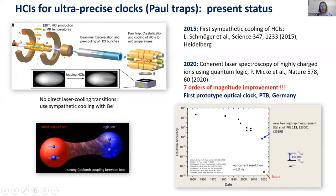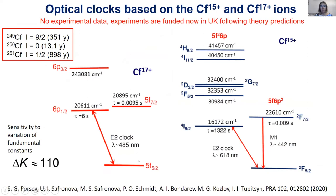The first experiment was done by José Crespo's group at PTB, demonstrating sympathetic cooling of highly charged ions using beryllium-plus coolant crystals, where large blobs are Ar^{13+}. In a subsequent experiment at PTB in collaboration with MPIK, coherent laser spectroscopy of Ar^{13+} was demonstrated — using the same quantum logic spectroscopy scheme as the aluminum-plus clock, with one clock ion and one coolant/probe ion. Remarkably, the precision improved by seven orders of magnitude in that single experiment, from 10^{-8} in Penning trap measurements to 10^{-15}. Progress toward 10^{-18} in the next five years is expected.